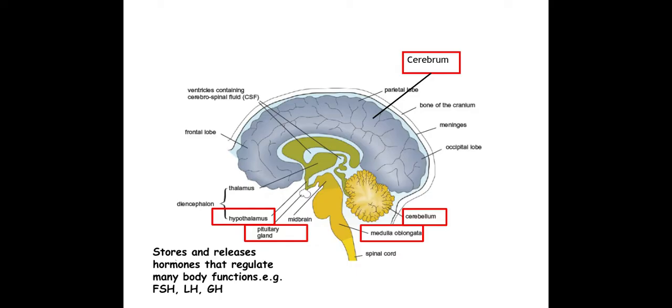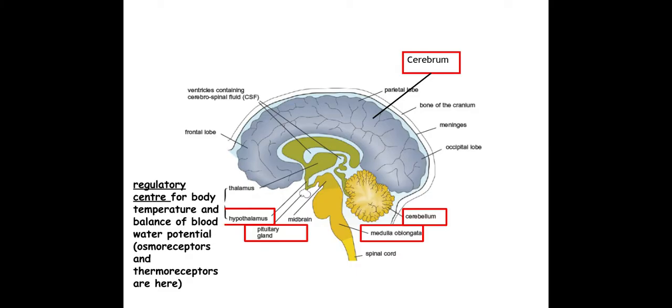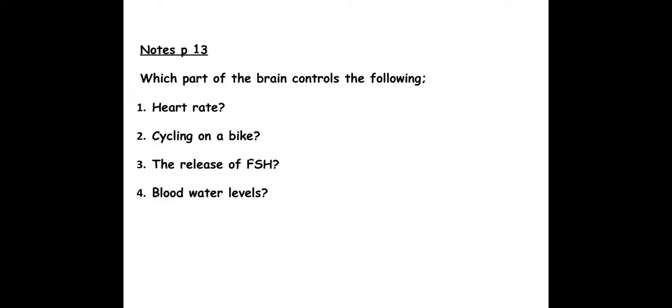And the last one we need to be aware of is the hypothalamus, and this is a regulatory center. It controls temperature and also controls blood water potential. So those are the five parts of the brain and what they do. Here's an exam question on that.